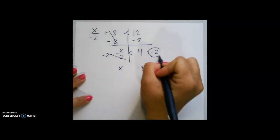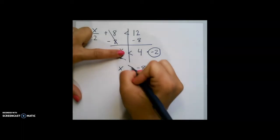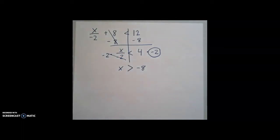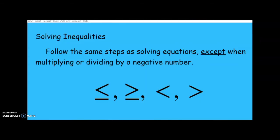Since I multiply by a negative number, I will flip my sign to give me x is greater than negative 8. Again, to review, you follow the same steps as solving equations except multiplying or dividing by a negative number. Remember to flip your sign to make sure that your inequality remains true.